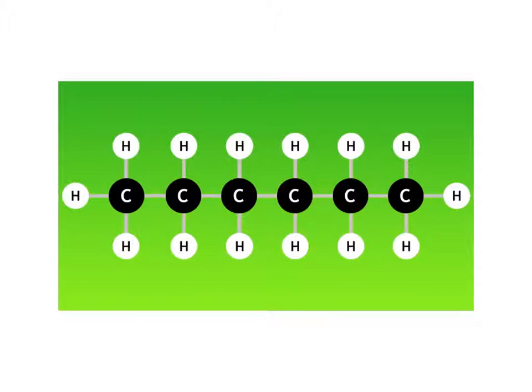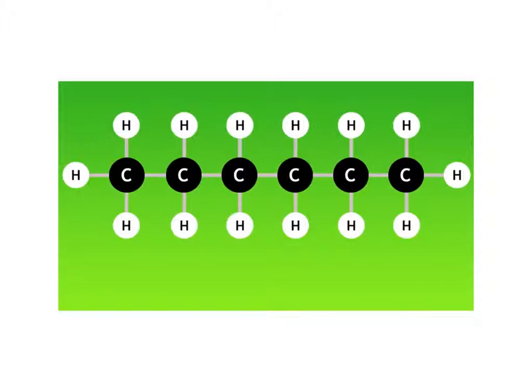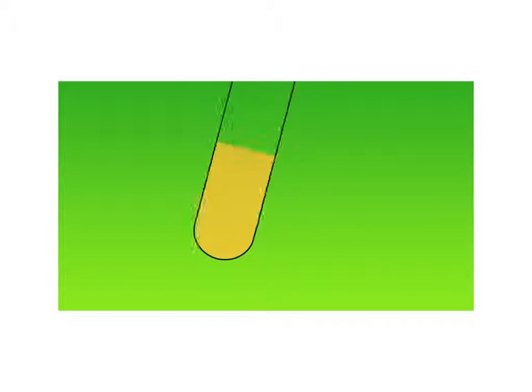Let us try the same with the alkane. Pause the video and have a think about what reaction, if any, will occur this time. Since alkanes are already saturated, there is no room for any bromine atoms to be added to the molecule. Consequently, no reaction takes place and the solution remains brown.